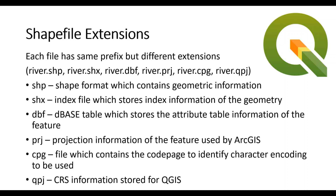The third one is .dbf, which is a dBase table, and it stores the attribute information of that particular feature. Since we need to project and plot it on a map, we need the projection. So .prj is the extension which contains the projection of the feature, and this file is read by ArcGIS software.